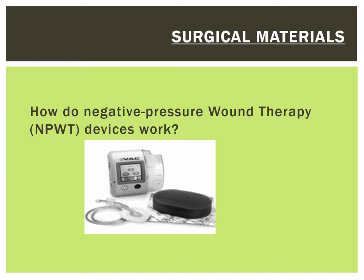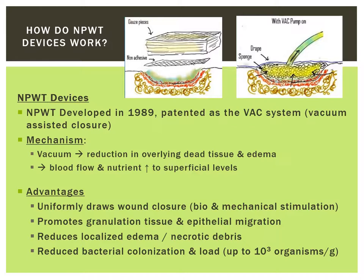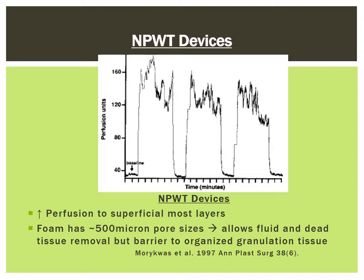The final skin closure materials we'll discuss are negative pressure wound therapy devices, also known as VACs or vacuum assisted closure devices. VACs not only provide a negative pressure environment to absorb edema and dead tissue, but also increase perfusion to the more superficial areas of a wound. As a result of this increased superficial perfusion, it promotes greater granulation tissue and reduces bacterial counts while stimulating wound healing. Studies show that skin perfusion is significantly increased when these devices are active compared to their baseline. In this diagram, you can see that when the negative pressure wound therapy device is off, there is only about 35 mmHg normal baseline pressure; however, when the wound VAC therapy device is turned on, the amount of perfusion units is significantly increased.